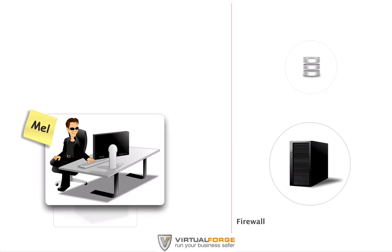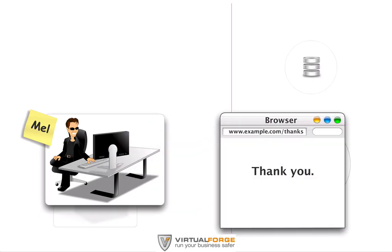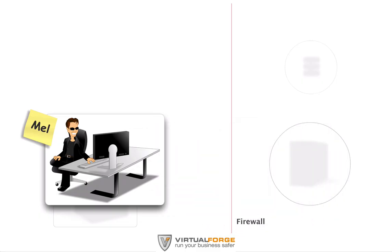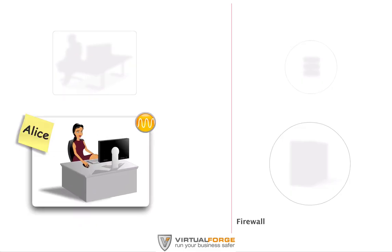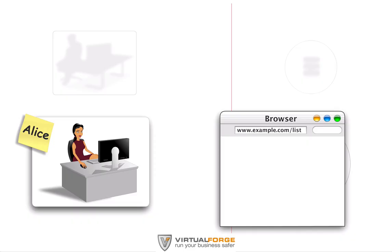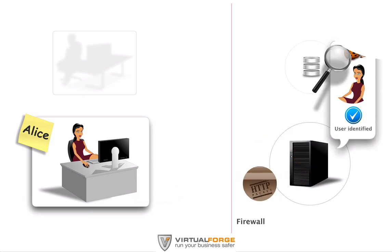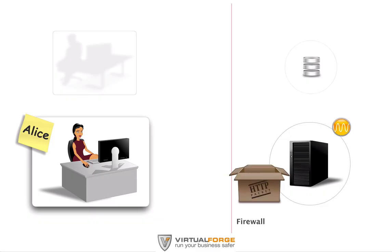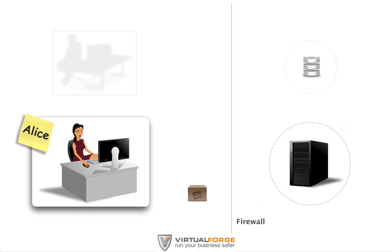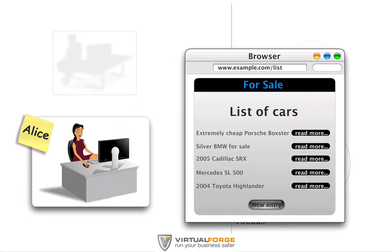After this successful little lunch break, all Mel has to do is wait — wait for someone else to open his malicious ad. Alice is taking another opportunity to check out if there are any new entries in the database. Again, her identity is validated by the server. Unfortunately for Alice, the new list of cars now includes Mel's cross-site scripting attack. Since the attack itself is hidden in the description, it will be launched the moment Alice opens the read more page.